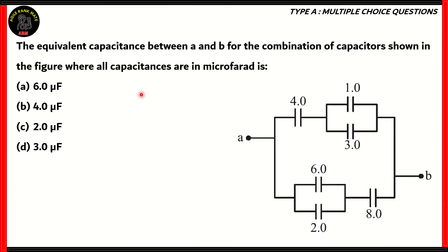Here is one of the questions. The equivalent capacitance between the points A and B in lowercase for the combination of capacitors shown in the figure, where all capacitances are in microfarad, is: 6 microfarad, 4 microfarad, 2 microfarad, or 3 microfarad.